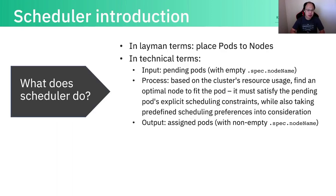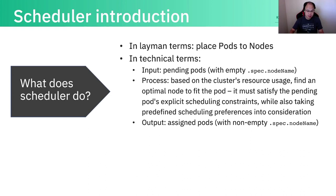So firstly, what does the scheduler exactly do? In short, the scheduler just does one thing, which is to put the pod to the nodes. That means it doesn't involve pod creation, and it also doesn't involve spinning up the underlying containers. It just finds a node for the pending pod. In technical terms, the scheduler will watch the pending pods, which means the pod doesn't have the spec node name set, and then it will look into the pod's explicit scheduling constraints like CPU memory requests and other fields, taking some predefined implicit scheduling preferences into consideration, and look at the cluster resource usage to make the decision to place the pod to the optimal node.